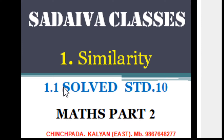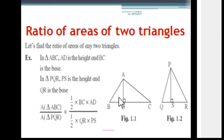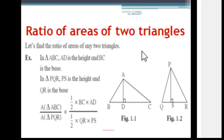Welcome students to Sadeva Classes. Today we are going to learn Similarity Maths Part 2, Standard 10th chapter. We are going to solve Practice Set 1.1 and along with that we are going to learn some basic things in this chapter. First of all, we are going to learn the ratio of areas of two triangles. To learn this, we have to consider any two triangles.